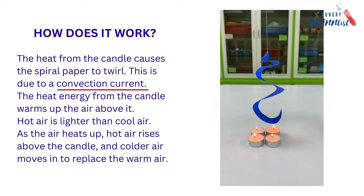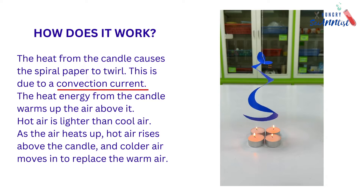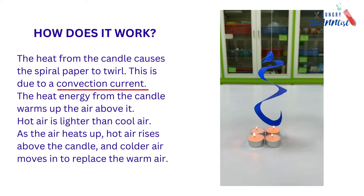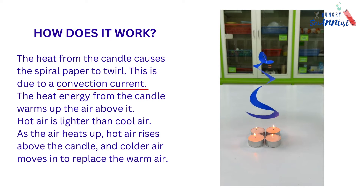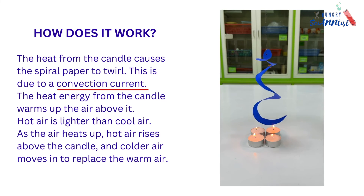How does it work? The heat from the candle causes the spiral paper to twirl. This is due to a convection current. The heat energy from the candle warms up the air above it. Hot air is lighter than cool air. As the air heats up, hot air rises above the candle and the colder air moves in to replace the warm air.